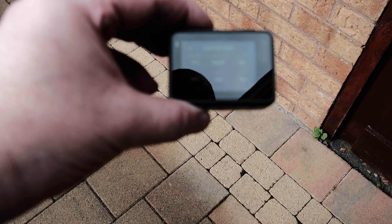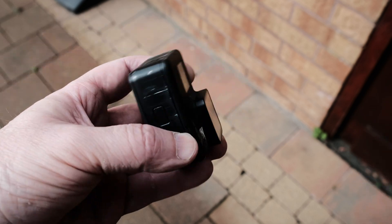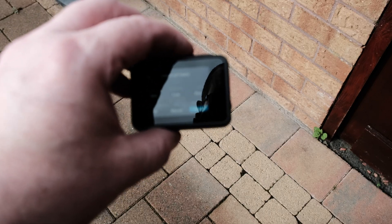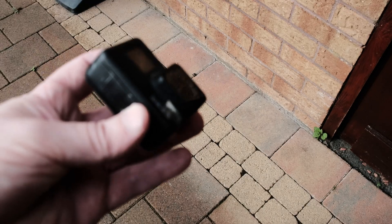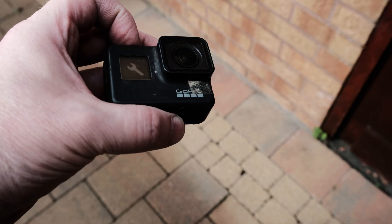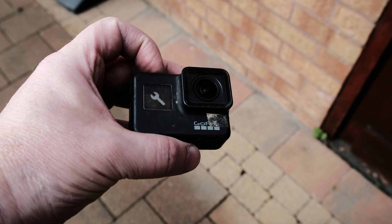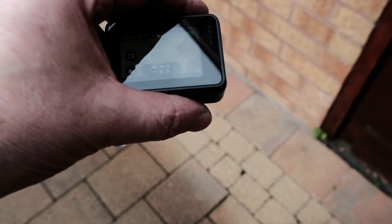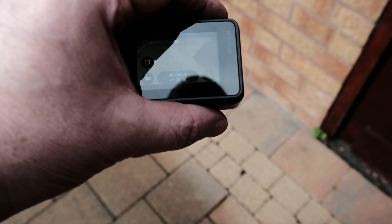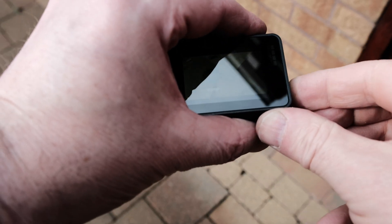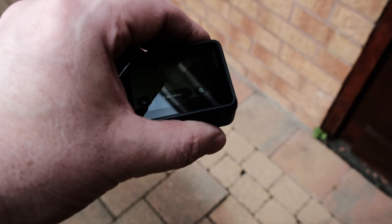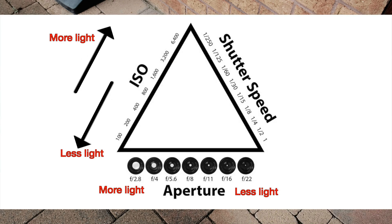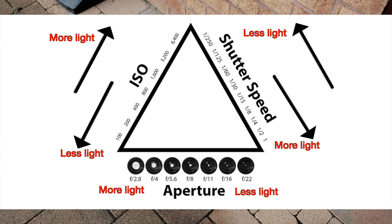You don't want them blowing out and going pure white. Now, action cameras nearly always have - in fact I think they all have - a fixed aperture lens. In these things it's f2.8. So if you want to change how bright or dark your image is, you can't change your aperture. You can only change your shutter speed or your ISO. So I let my shutter be auto and I let my ISO be auto.